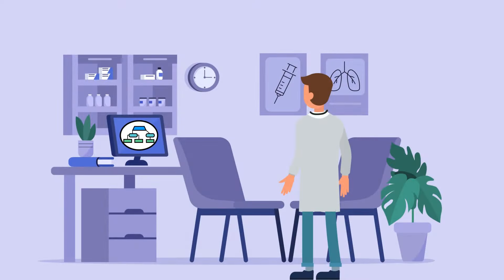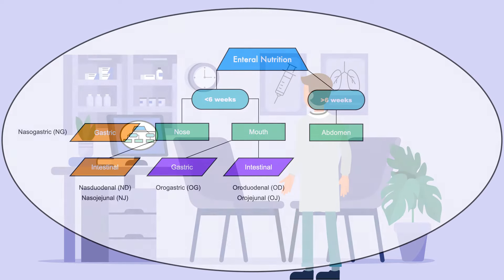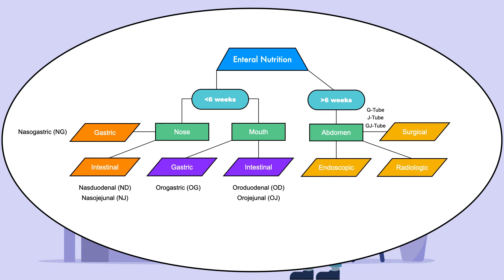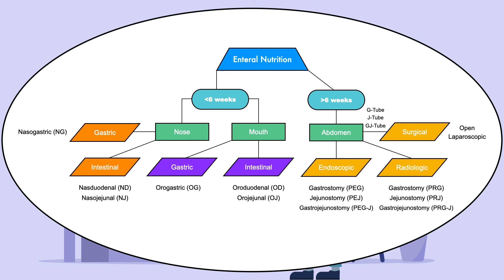With this, we can add the long-term feeding tubes to the flow chart. When a tube is inserted through the abdomen, it can be a gastrostomy, jejunostomy, or gastrojejunostomy. These can be labeled as G-tube, J-tube, and GJ tube. We can further specify the name of the long-term feeding tube by referring to the procedure used to place it. The three procedures are percutaneous endoscopic, percutaneous radiologic, and surgical, which can be open or laparoscopic.